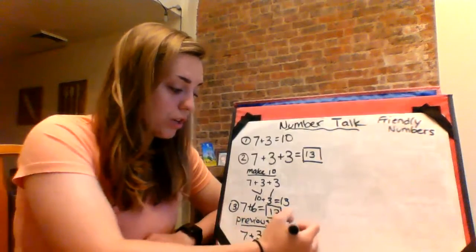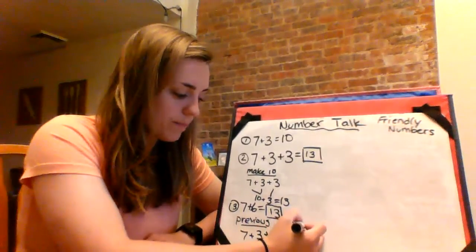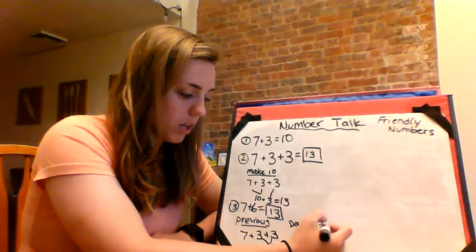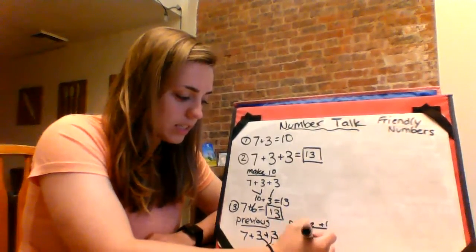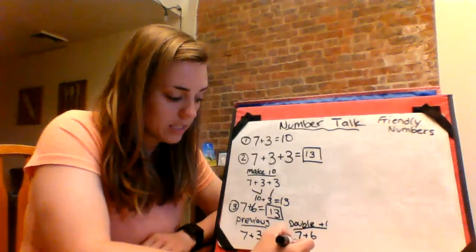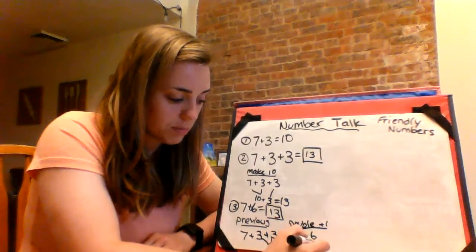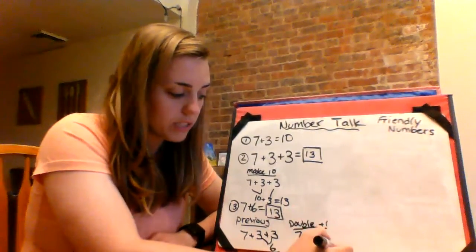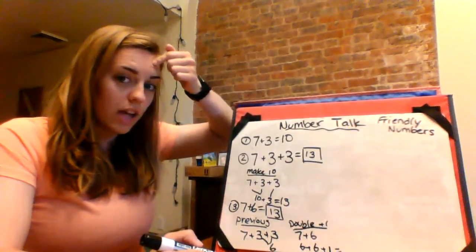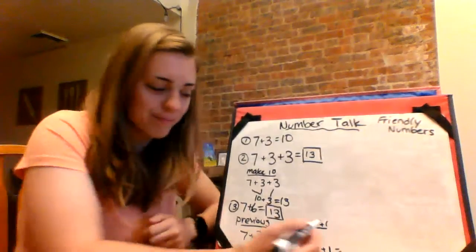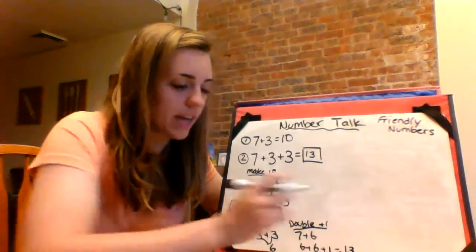You also could have done a double plus one. Double plus one. Seven plus six is the same as six plus six plus one. And we know six and six is twelve, and one more is thirteen. So you could have done it that way.